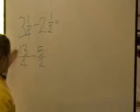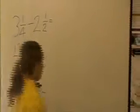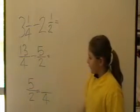So now your sum is 13 on 4 take away 5 on 2. Now we have to find our common denominator. The common denominator for 4 and 2 is 4.